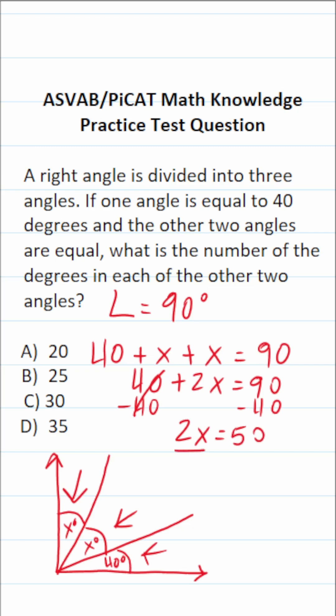And finally, to get x by itself, let's divide both sides of this equation by 2. This says x equals 50 divided by 2, which is 25. So we can see that each of these other angles must measure 25 degrees. So this one is going to be B, of course.